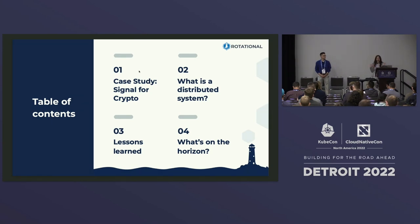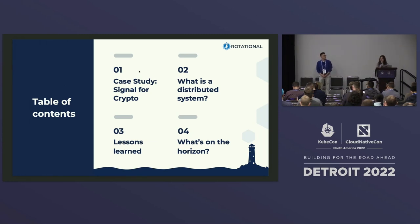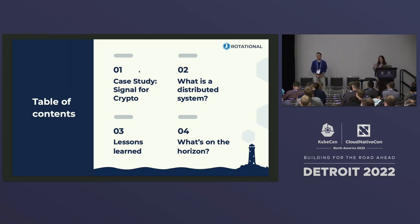Our talk is in four movements. I'll start by setting the scene — telling you about a geo-distributed system we've been building for about two years. Then we'll cover what a distributed system is and key problems you have to solve. After that, hard-won lessons — things we messed up and how we worked through them. Finally, what we think is coming next based on our experiences.